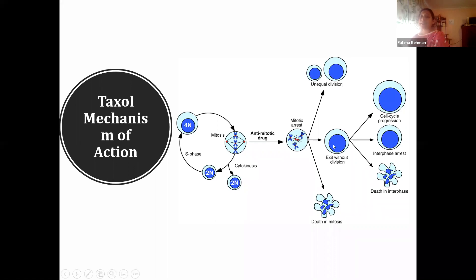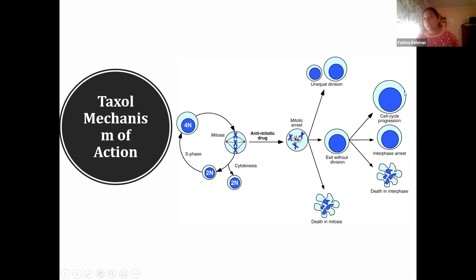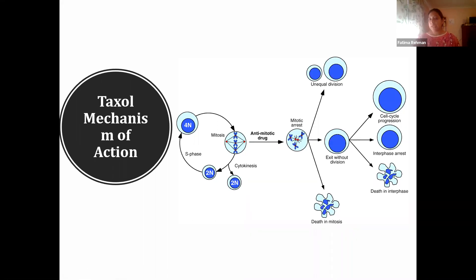Taxol-treated cells have several possible fates: they may be stalled and unable to move forward or retreat, eventually dying in mitosis; they may exit without dividing — if able to retreat, they may try another cell cycle, replicating DNA again and ending up with 8n DNA content, potentially leading to a multinucleated cell; they may arrest in that stage, unable to divide but stable; or eventually undergo interphase death, where the cell is so damaged it dies out through other mechanisms.